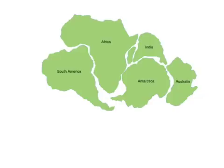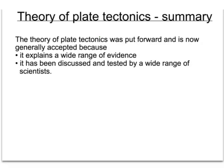Although Wegener put forward a lot of evidence about continental drift and suggested the continents had once been joined together, he couldn't say what forces had driven them apart. For this reason, other scientists at the time did not agree with his theories. Wegener's theory of continental drift is an example of how a theory comes to become accepted — it was only in the 1960s that other evidence was found which supported the idea of continental drift. Generally, theories are put forward because they explain a wide range of evidence, and they are accepted when they have been discussed and tested by a wide range of scientists.